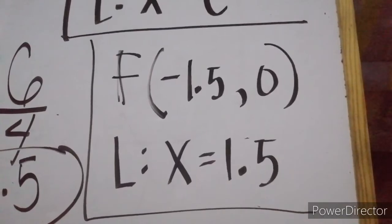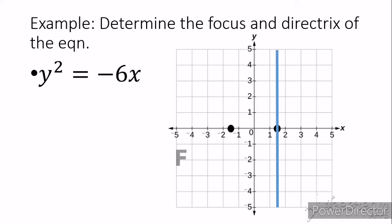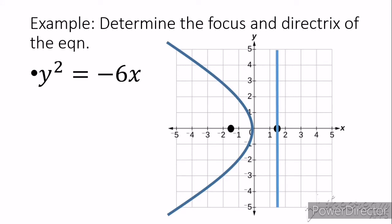Let's graph it. We place dots at positive and negative 1.5. Our directrix with equation x is equal to 1.5 is located at the right side, and our focus with coordinates negative 1.5 and 0 is on the left side. We then draw a parabola opening to the left side of the graph.